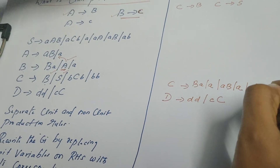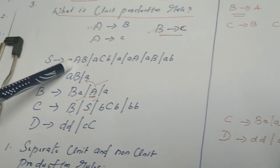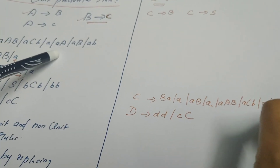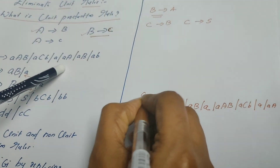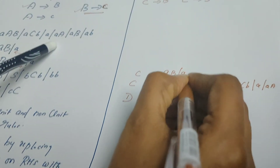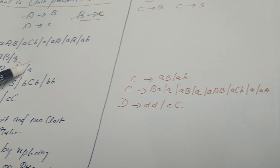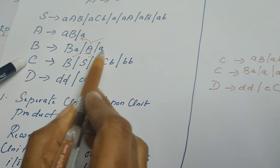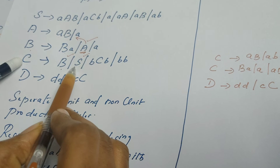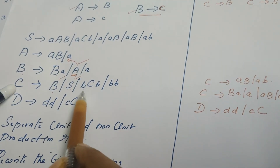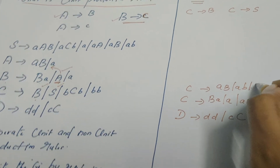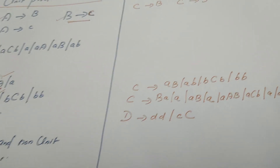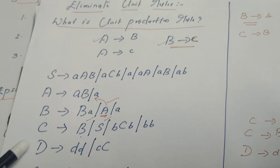What is defined for S? S derives AAB | ACBA | AA. So C derives S becomes: C derives AAB | ACBA | AA. Since there is no more space, let me write it on the right: C derives AB | A | (the rest from B's definition) and from S's definition. The definition of C is now: C derives BA | AB | A from B's substitution, plus AAB | ACBA | AA from S's substitution, and C also retains C derives BCB | BB from its non-unit rules.